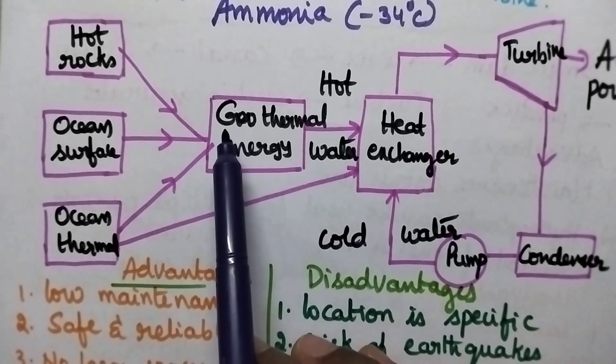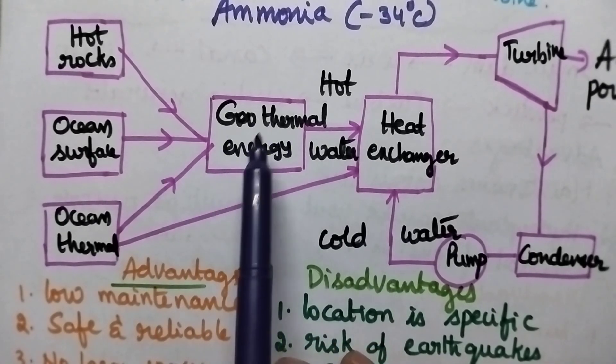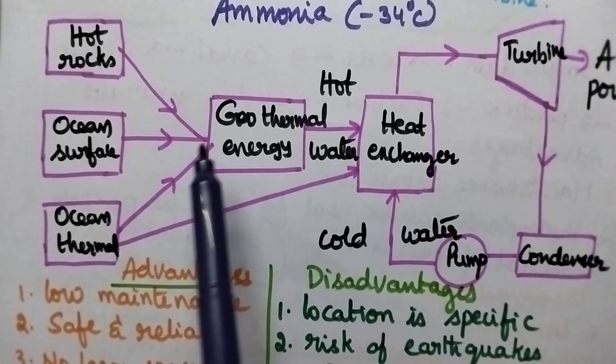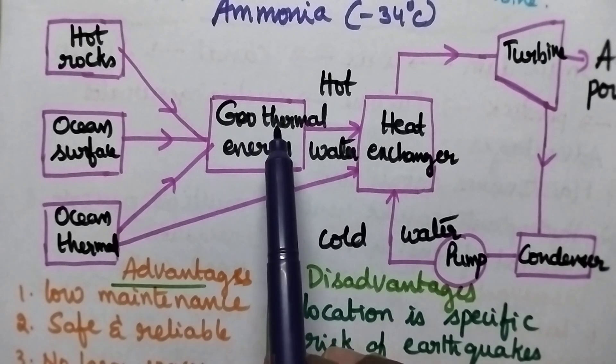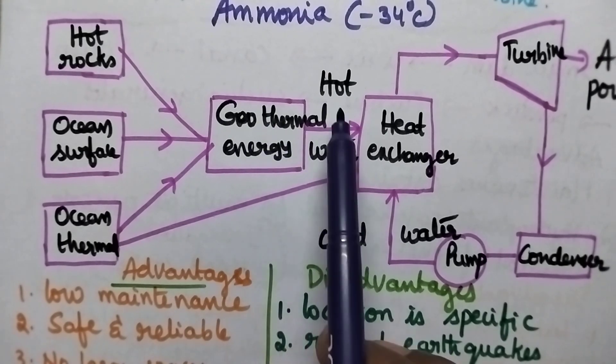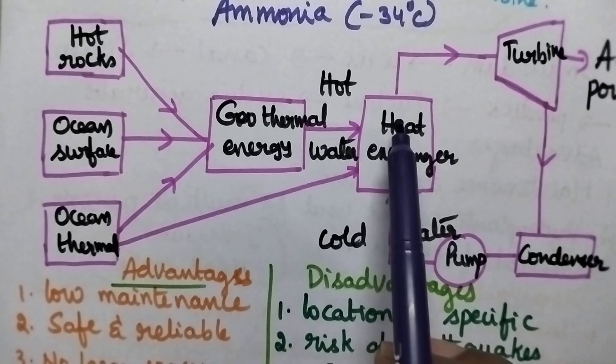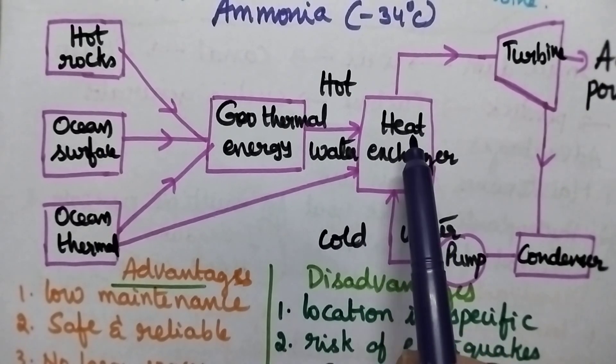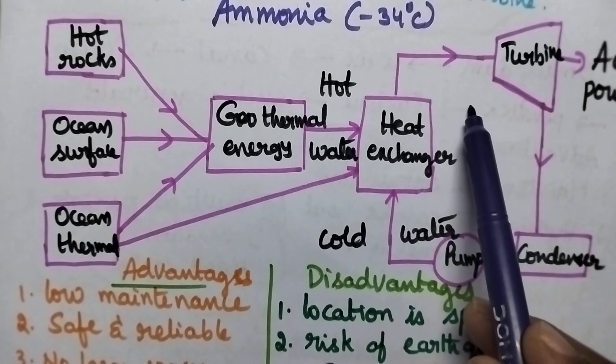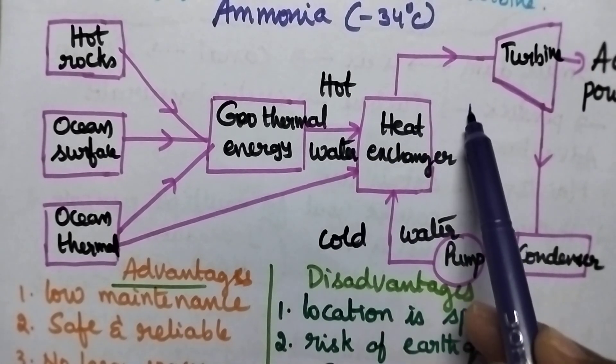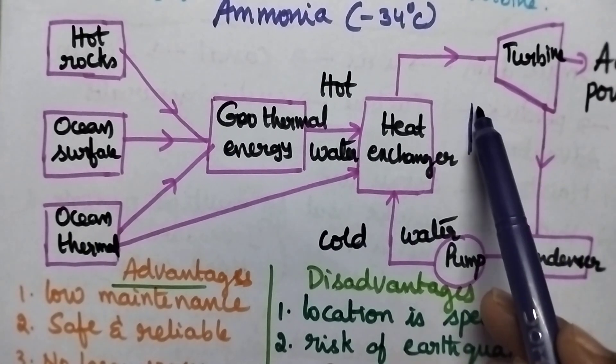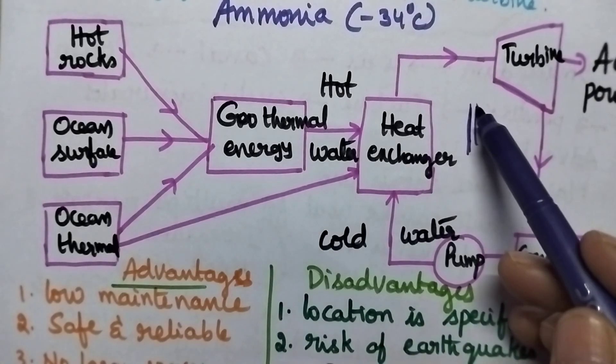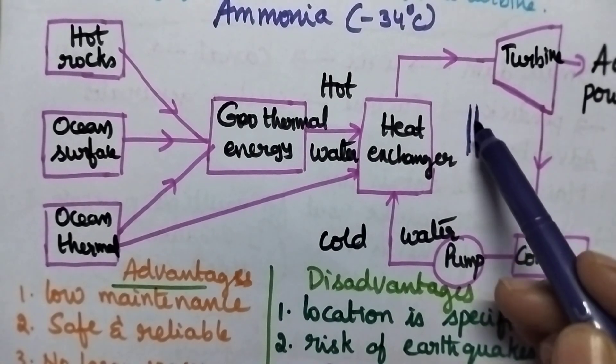The geothermal energy from hot rocks, ocean surface, or ocean thermal energy is connected to hot water, which flows to a heat exchanger. In the heat exchanger, a secondary fluid is present—liquid ammonia. Hot water from the ground enters one pipe, while liquid ammonia is pumped through another pipe.